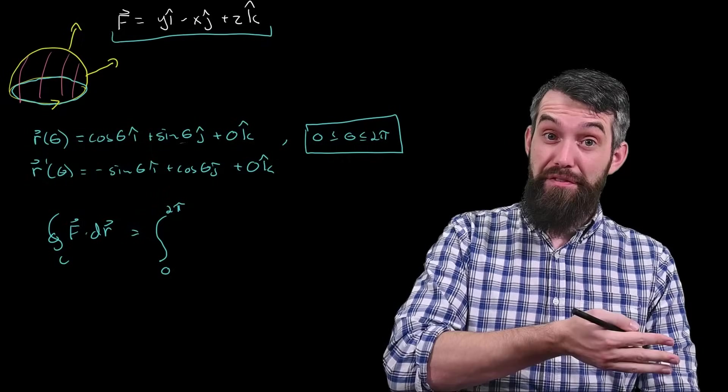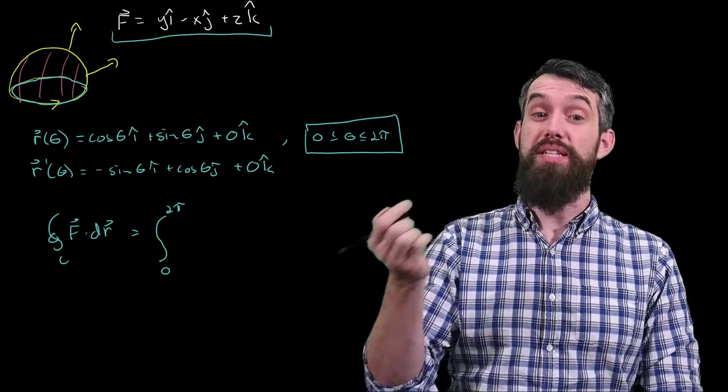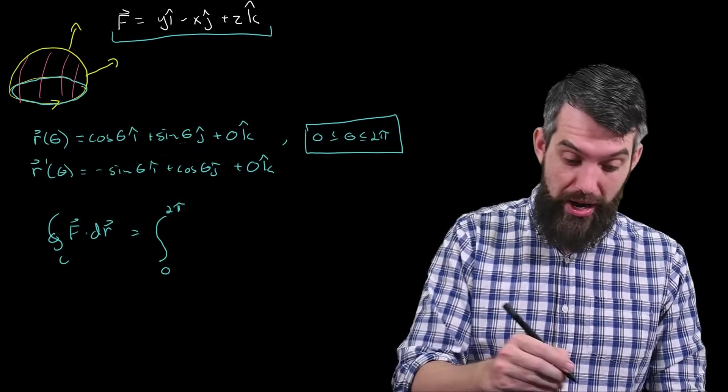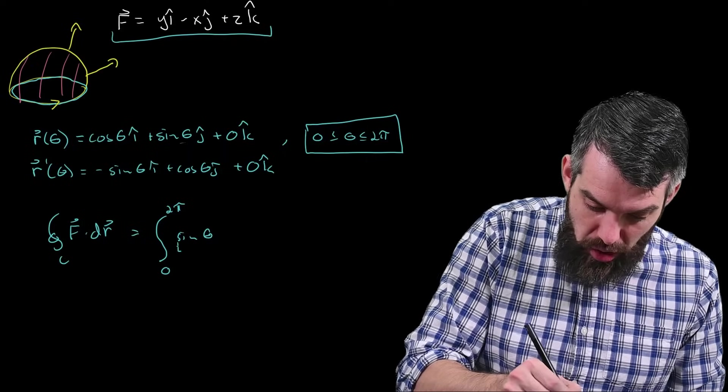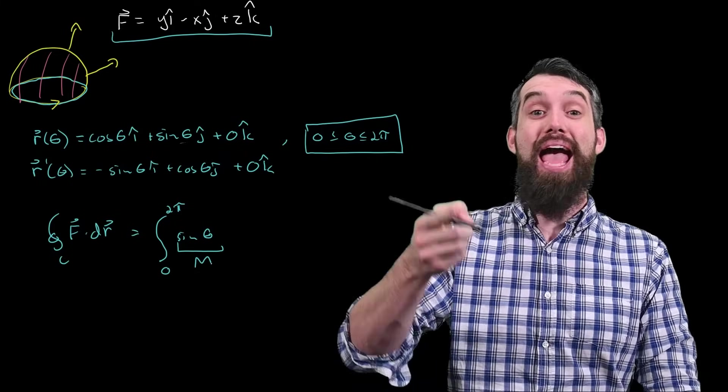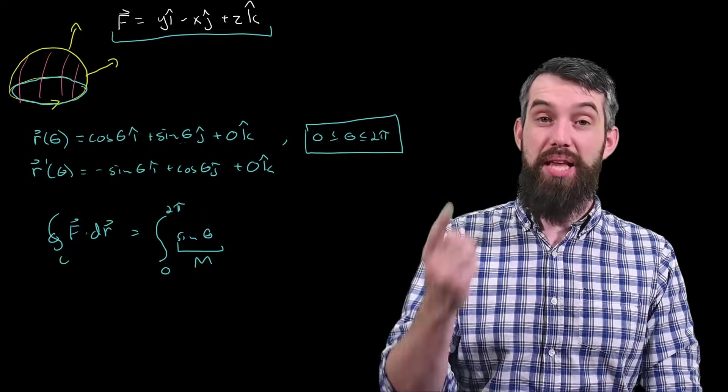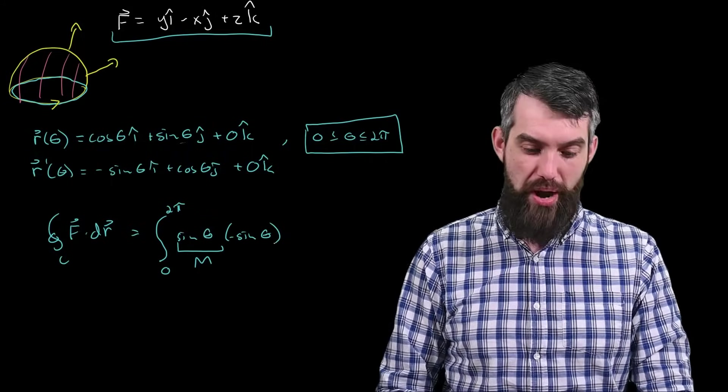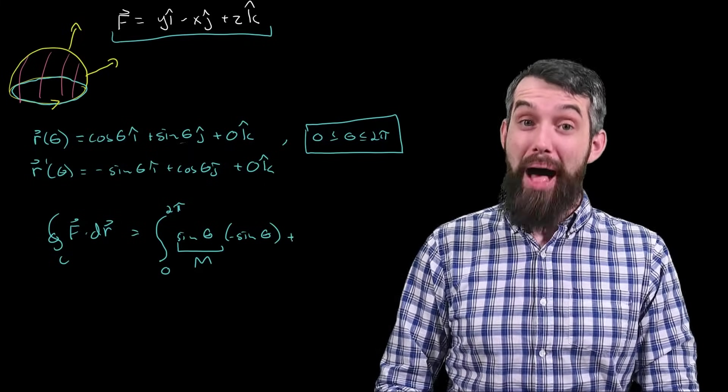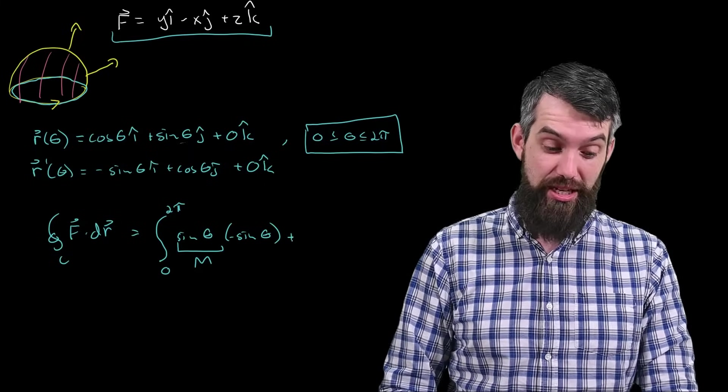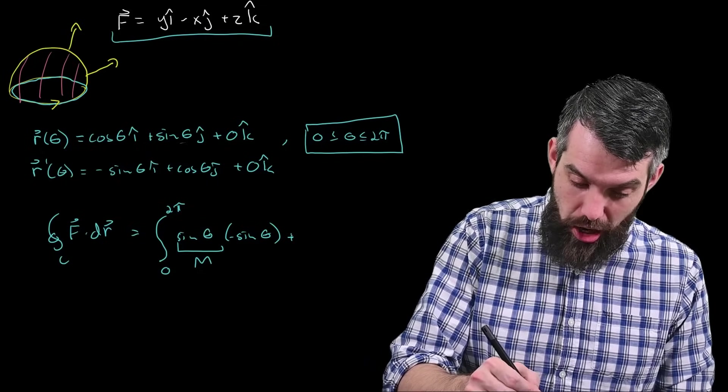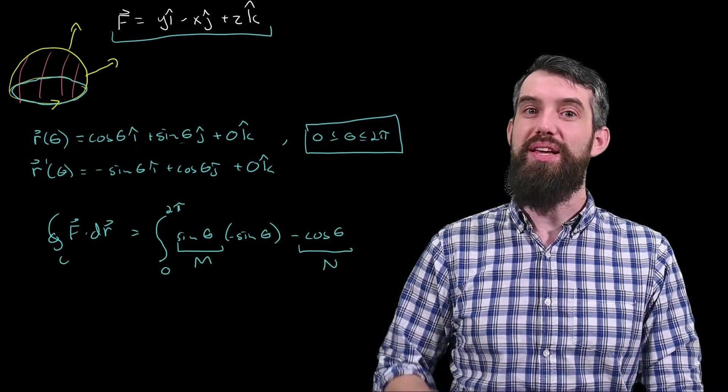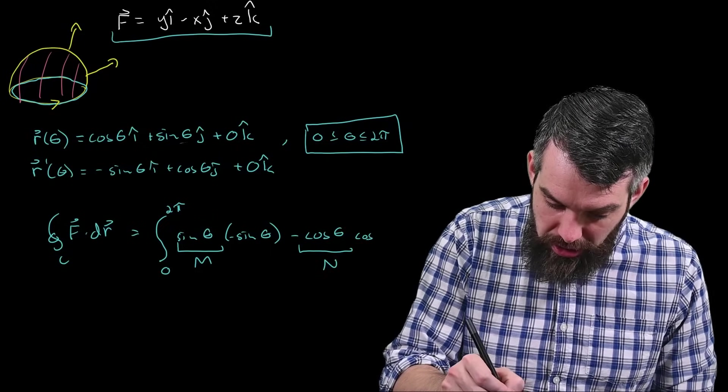Okay, so then what we're going to be integrating is the field f dotted with r-prime dt. And so what I have is my field components. Well, the first field component is y, which in this parameterization is sine of theta. So we sometimes call that the m, if the field is written as m, n, and p components. Anyway, sine of theta times the minus sine of theta, the i-hat component of my r-prime. Then to that I'm going to add the minus x, which, written in terms of our parameterization, is going to be minus cosine. So minus cosine of theta. That is our n multiplied by the j-hat component of r-prime, which is cosine of theta.